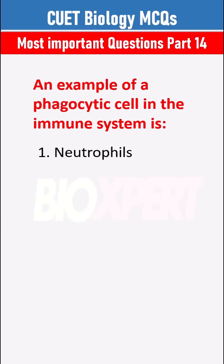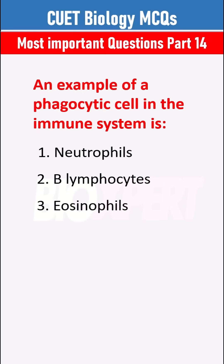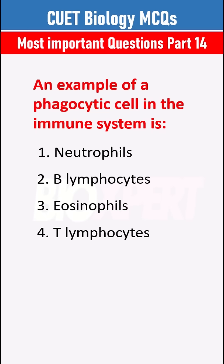An example of a phagocytic cell in the immune system is Neutrophils.